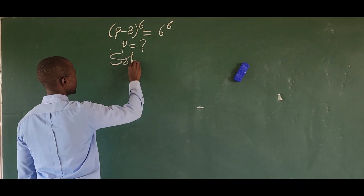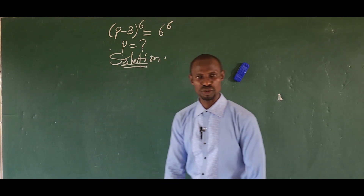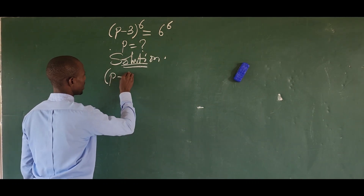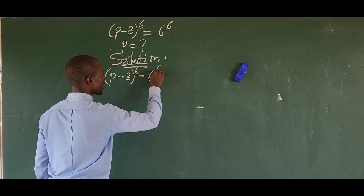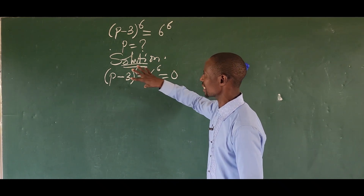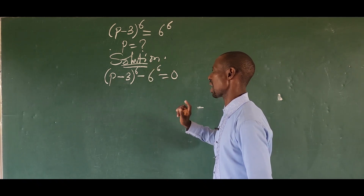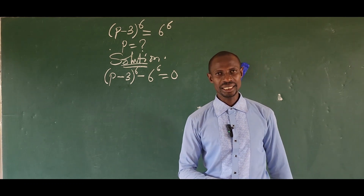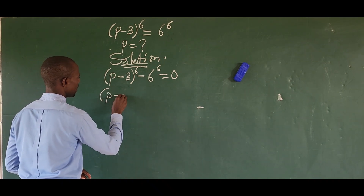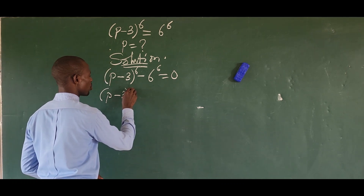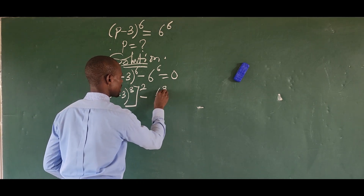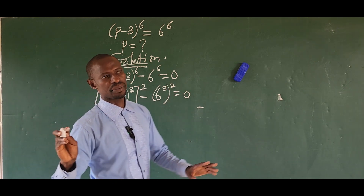Let's go into the challenge. The first thing we have to do is move this quantity to this side, so we're going to have bracket p minus three, all raised to the power of six, minus six to the power of six, equal to zero. We have to consider the power — we can rewrite this power as three times two, giving us bracket p minus three, all raised to the three, plus bracket all raised to power two, then minus six raised to power three, all raised to power two, equal to zero.